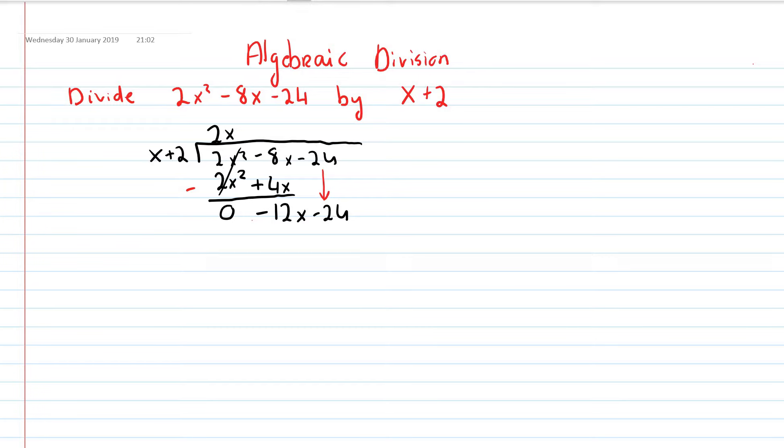What do I have to multiply x by to get to minus 12x? And the answer is minus 12.